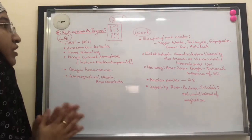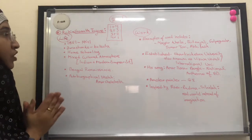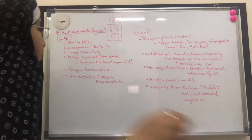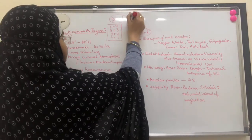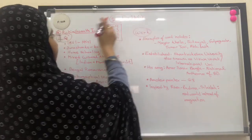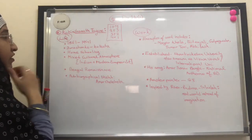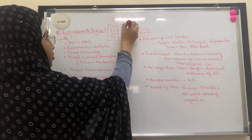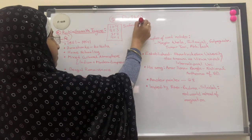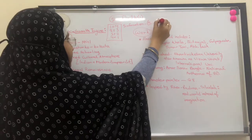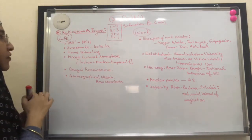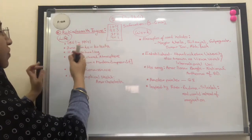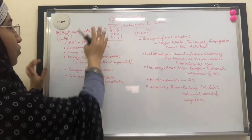We'll begin with Rabindranath Tagore. The question format is Part B Roman I — write about life and work for 5 marks. We need 5 pieces of information, completed within 5 to 6 minutes. These 5 informations can be divided as 1 from life and 4 from work, or 2 from life and 3 from work, or 3 plus 2, or 4 plus 1.